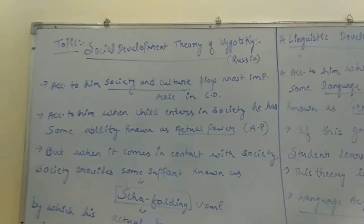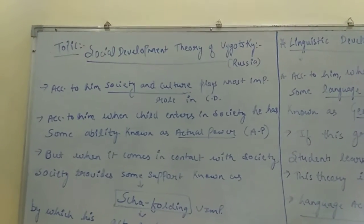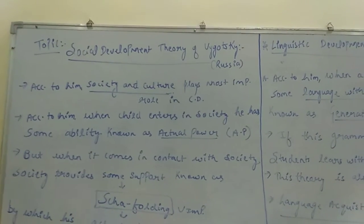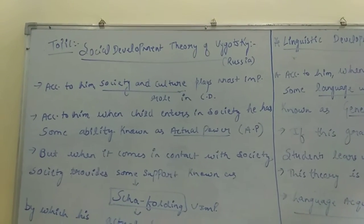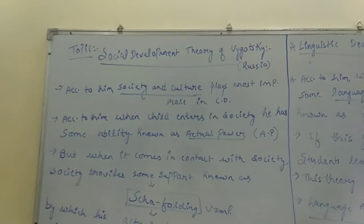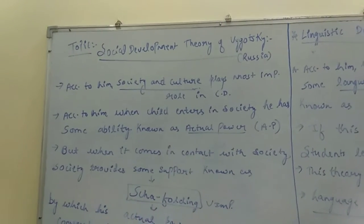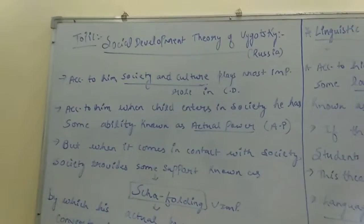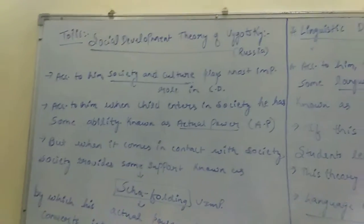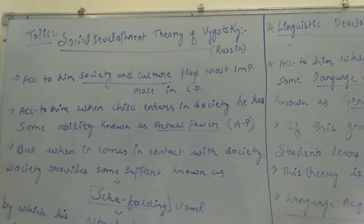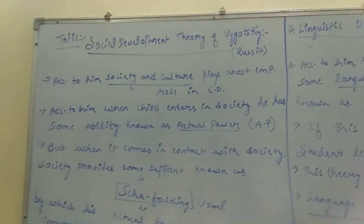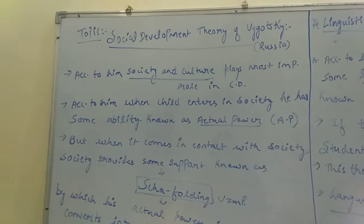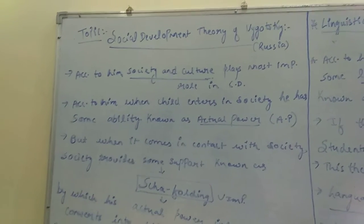Hello guys, welcome back again. As we discussed in the first video on cognitive theory, in this video we will cover two theories. They are small theories, not big ones. First, let's talk about the social development theory of Vygotsky. He was a psychologist who gave his own theory called Social Development Theory. He was from Russia, while Jean Piaget was from Switzerland.